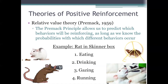According to the Premack principle, we can use eating to reinforce any of the other behaviors, because eating was the most valuable behavior for this rat — it had the highest relative value. For example, if you made the ability to eat contingent on gazing outside, you could increase the frequency of gazing. Eating could reinforce gazing because eating is more valuable to the rat than gazing. Or if you only let the animal eat after it first drinks some water, you'd increase drinking. The rat prefers eating over drinking, so eating reinforces drinking.